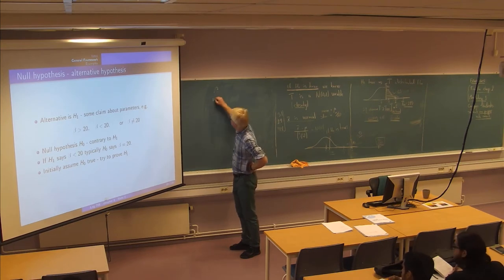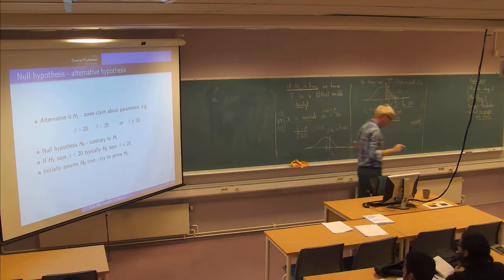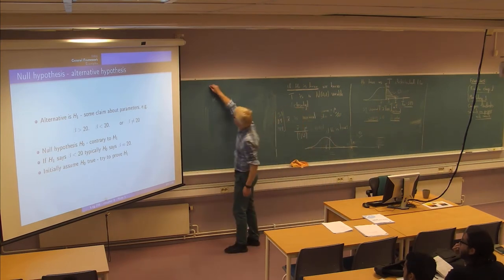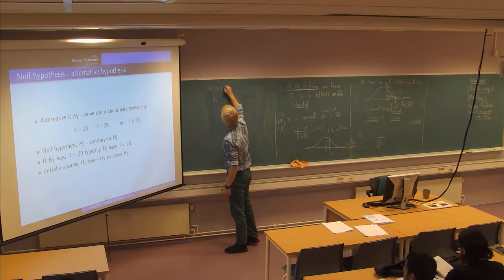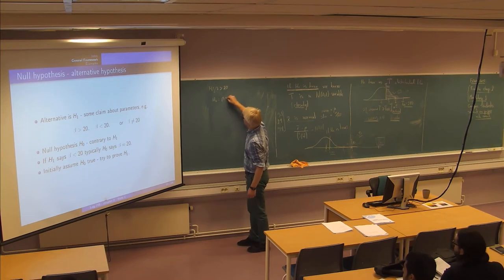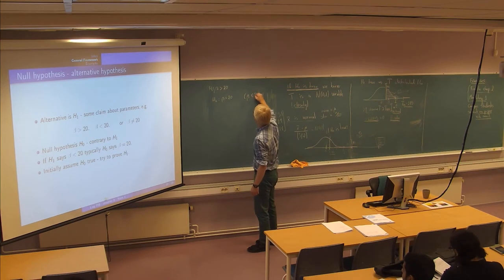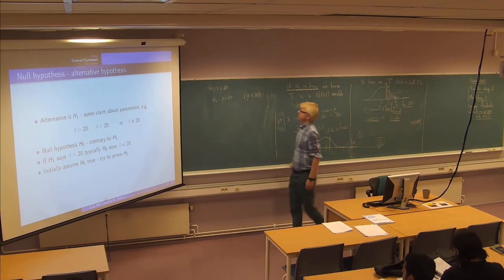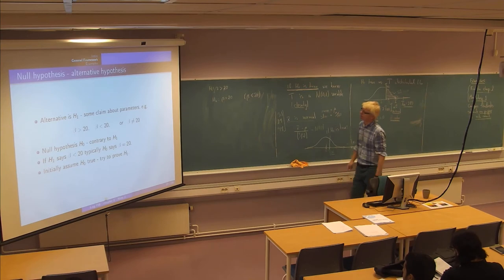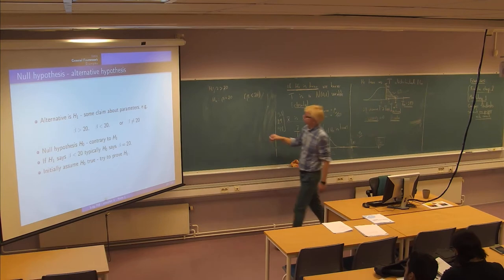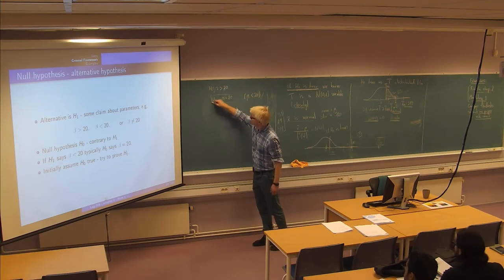The null hypothesis is something contrary to h1. It doesn't have to be the logical opposite, but if h1 says beta greater than 20, we will very often see h-zero being just beta equal to 20. Technically we work in this form, and the idea is we are trying to prove h1, but we initially assume h-zero is true.